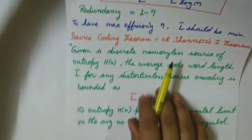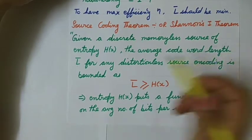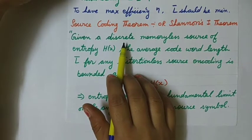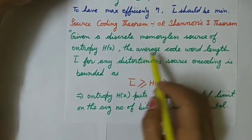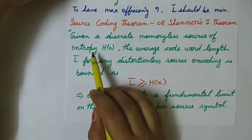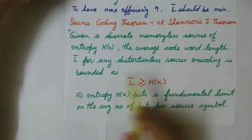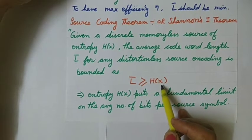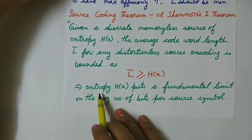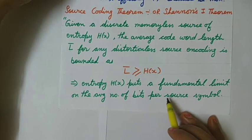There is a source coding theorem, also called Shannon's first theorem. Given a discrete memoryless source of entropy H(X) — discrete because it gives output at discrete instances of time, and memoryless because its output does not depend on previous outputs — the average code word length L̄ for any distortion-less source encoding is bounded as L̄ ≥ H(X). That is, the minimum value of L̄ cannot be less than the entropy H(X), which puts a fundamental limit on the average number of bits assigned to every source symbol.